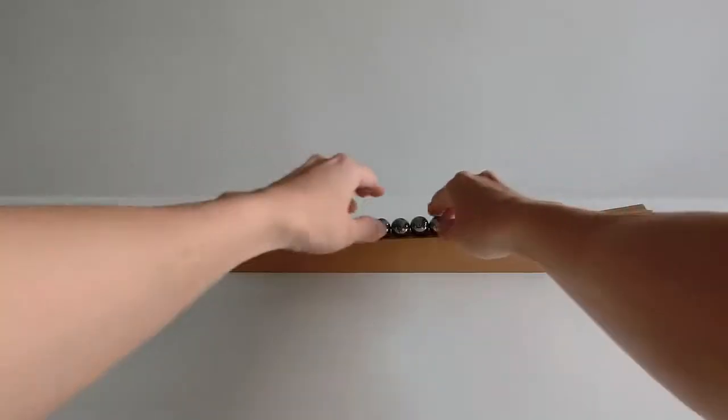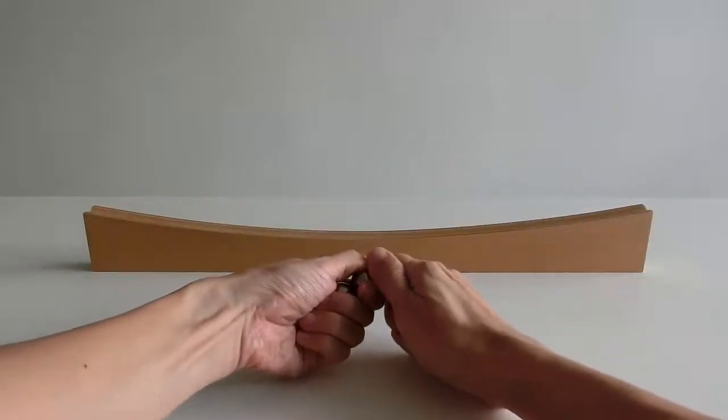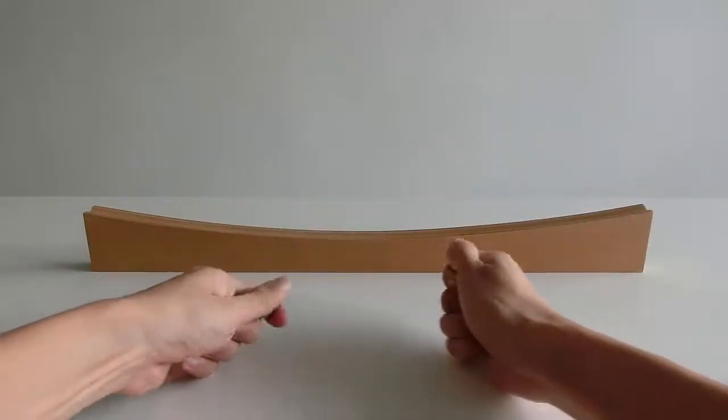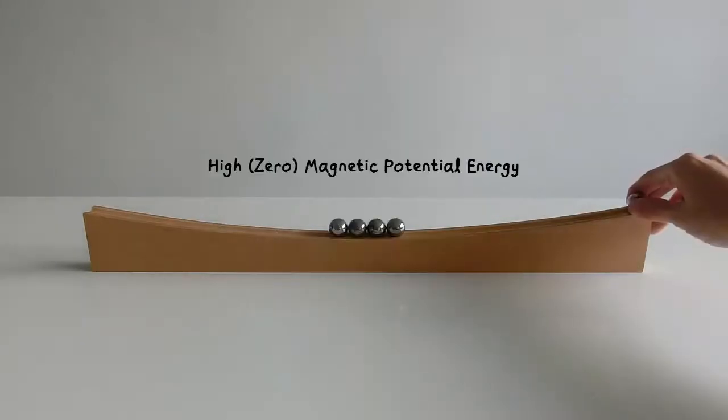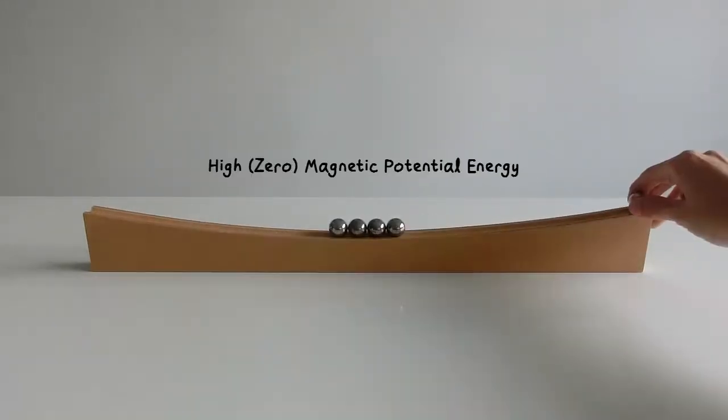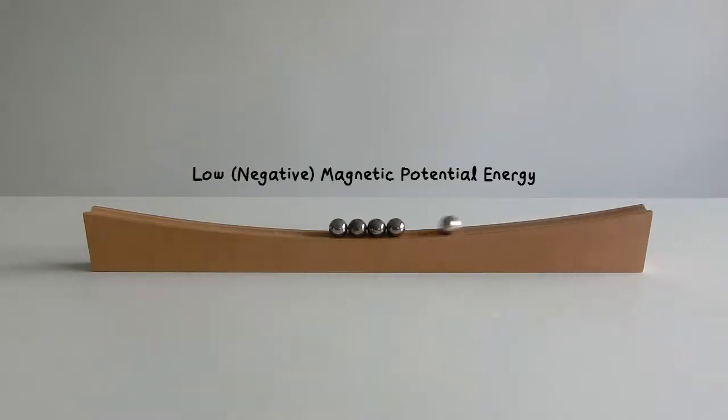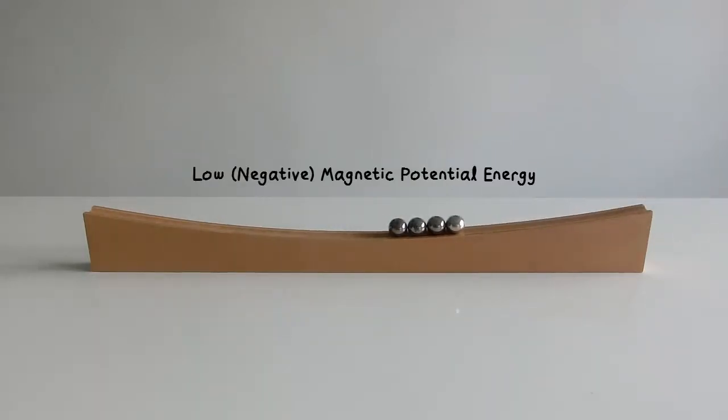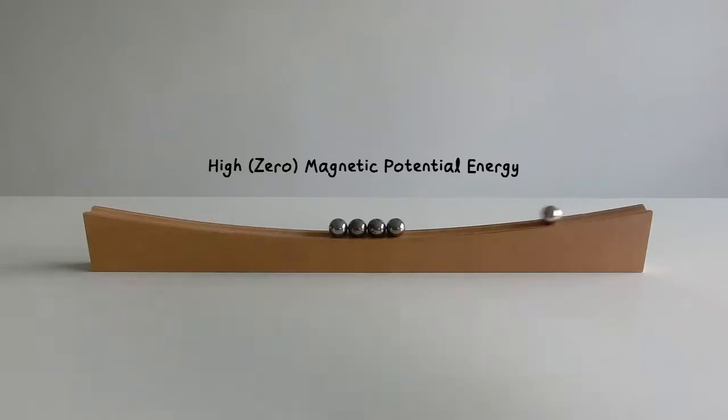Anybody who reloaded the magnetic cannon will realize that a lot of work must first be put in to raise the magnetic potential energy. As the magnetic ball approaches, there is a sharp drop in magnetic potential energy. The increase in kinetic energy came at the expense of the decrease in magnetic potential energy.